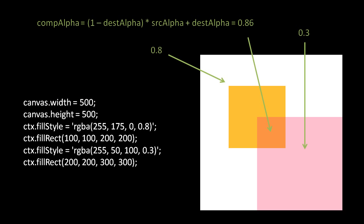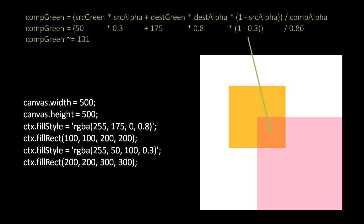To see this in action: if we draw an orange square with alpha 0.8 and then a magenta square with alpha 0.3 partially overlapping it, the overlapping pixels have a composite alpha of 0.86. Looking just at the green channel, the destination green value is 175 and the source green value is 50. Plugging those into the formula gives a composite green value that rounds to 131. We do the same computation for the red and blue channels to get the full color.